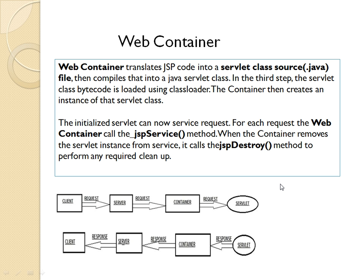First of all, we should know what a web container is. A web container is something which processes the JSP code for us. It translates the JSP code into a servlet class, because every JSP page must first be converted to a servlet before it is processed. So the responsibility of converting a JSP page into a servlet class belongs to the container. The container sends the request to the servlet, the servlet sends the response back to the container, then to the server, and finally to the client.